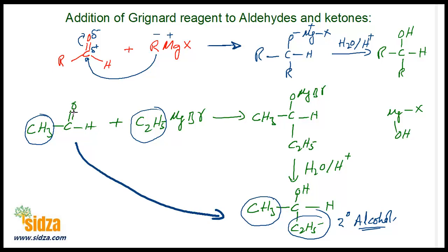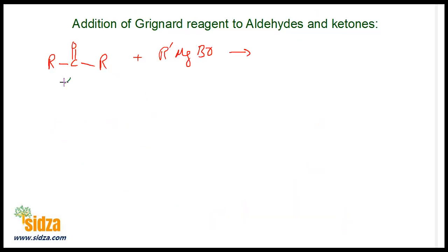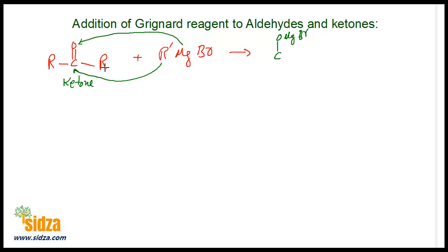Similarly, if you react a ketone with the Grignard's reagent and then do the hydrolysis, rather than a hydrogen on the carbon, you now have an alkyl group. So from ketones you will get a tertiary alcohol. The alkyl from the Grignard's reagent will attack the carbon and the magnesium will bond to the oxygen, giving an addition product with oxygen bonded to magnesium bromide and two alkyl groups from the ketone.